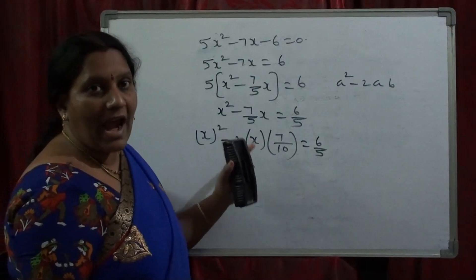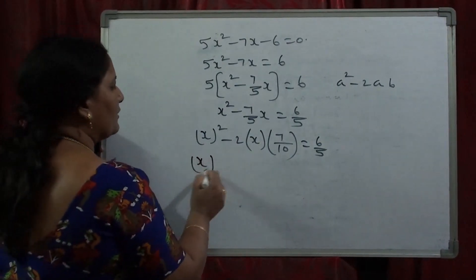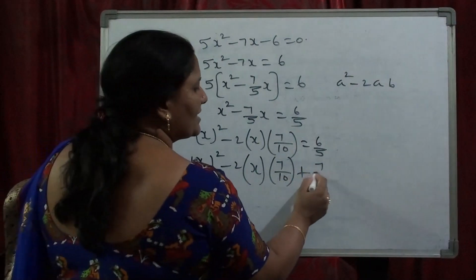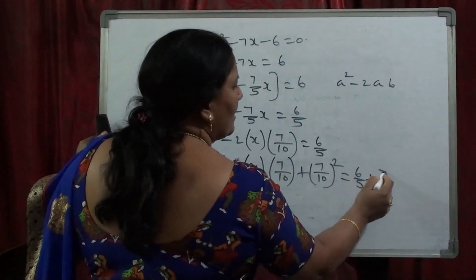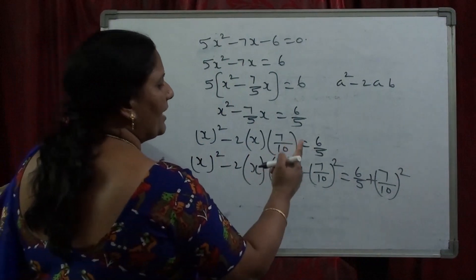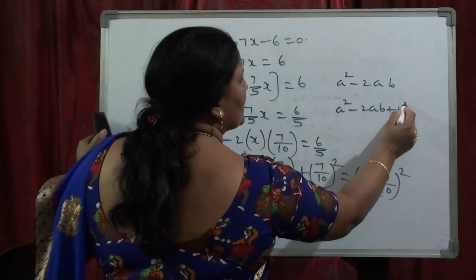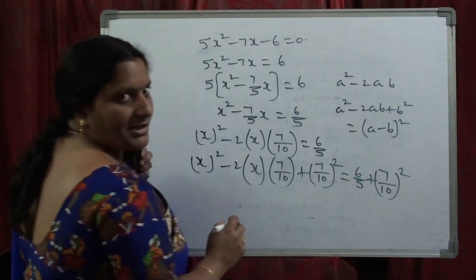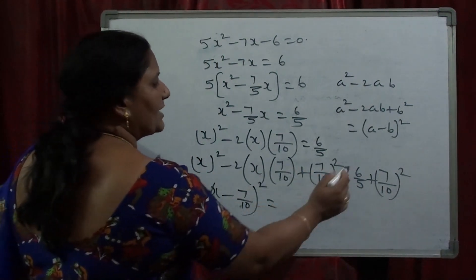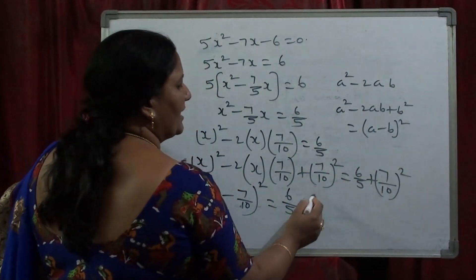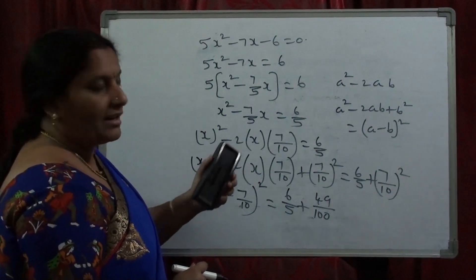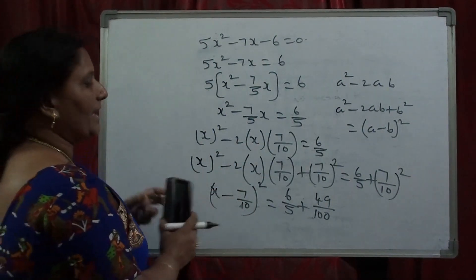Nothing but (7/10)² should be added to LHS. Then x² − 2·x·(7/10) + (7/10)² = 6/5 + (7/10)². This becomes A² − 2AB + B², which is the expansion of (A − B)². Here A is x and B is 7/10, so (x − 7/10)² = 6/5 + 49/100. Since (7/10)² = 49/100 because (A/B)² = A²/B², and 7² = 49, 10² = 100.